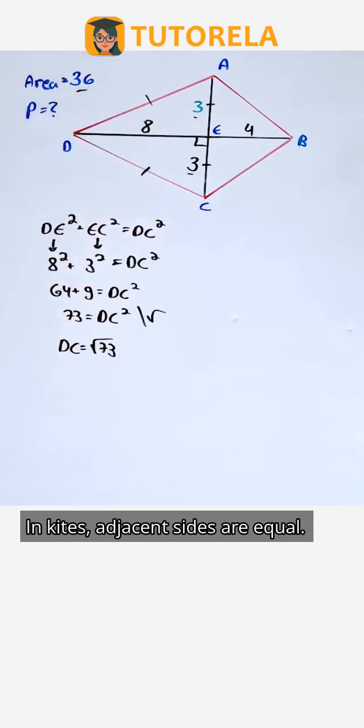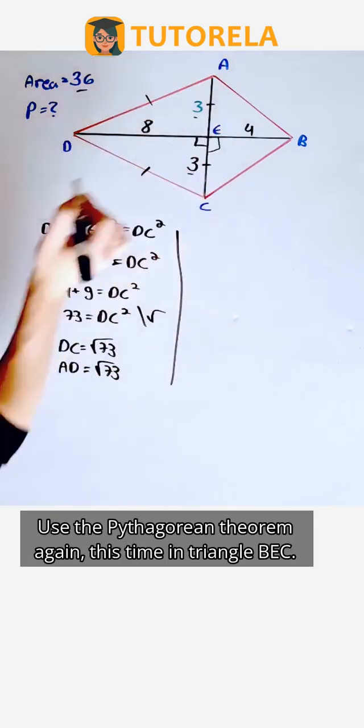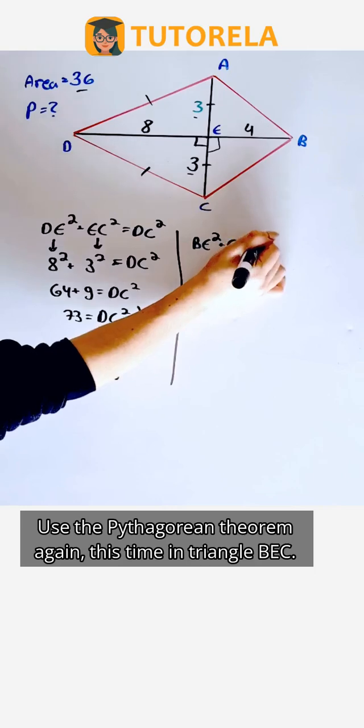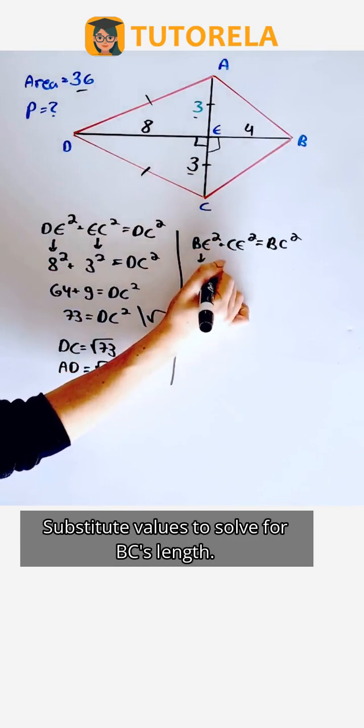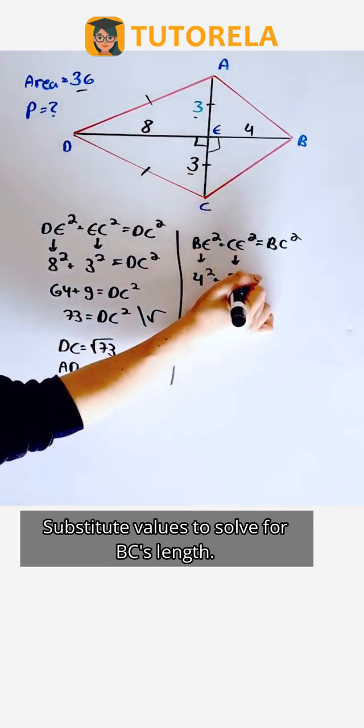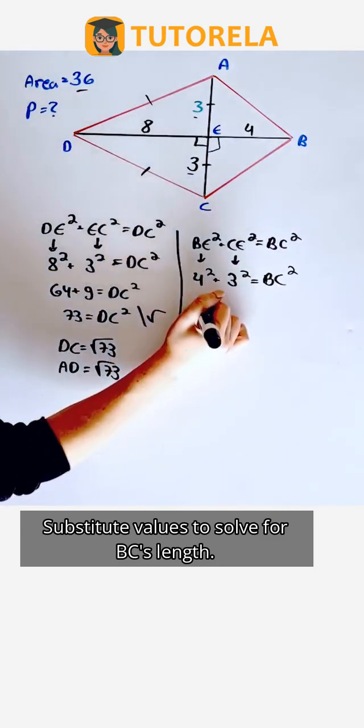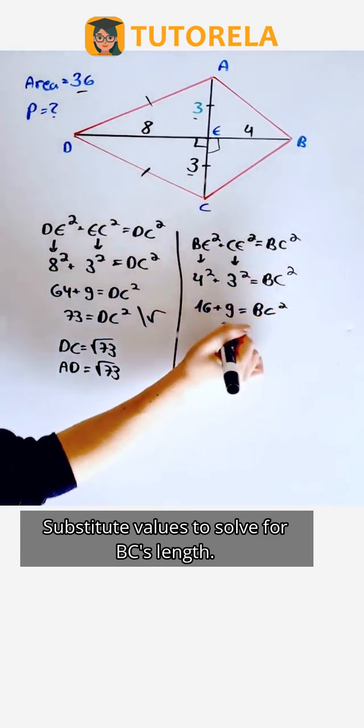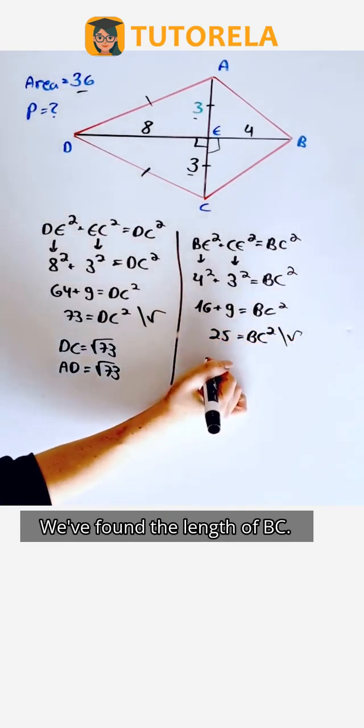In kites, adjacent sides are equal. Use the Pythagorean theorem again, this time in triangle BEC. Substitute values to solve for BC's length. We found the length of BC!